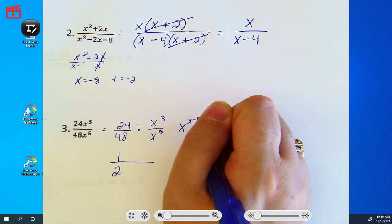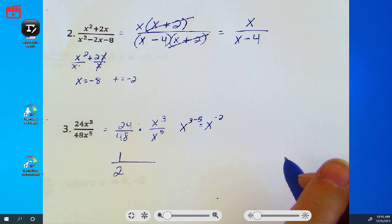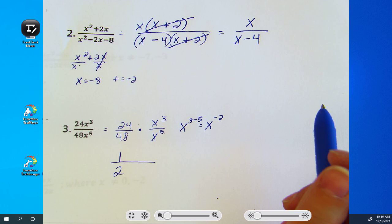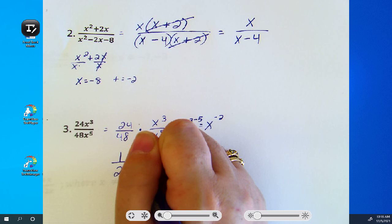Which you get x to the negative 2. You always do top minus bottom. So now that I have x to the negative 2, where do negative exponents go? The bottom. And you're done.